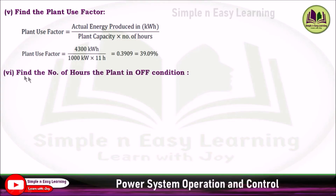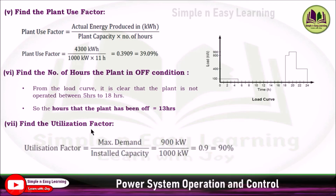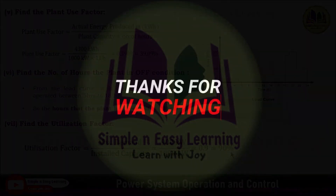Find the number of hours the plant is in off condition. Out of 24 hours, 11 hours the plant is used, so the remaining 13 hours the plant is in off condition. Find the utilization factor. Utilization factor equals maximum demand divided by installed capacity: 900 kilowatt divided by 1000 kilowatt, giving 90%.